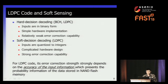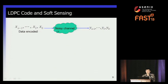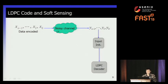For LDPC code, its error correction strength strongly depends on the accuracy of the input information. This input information represents the probability information of the data stored in NAND flash memory. So when we store data in NAND flash memory and read it back, it suffers from all the noises I just introduced, and we have to put the data into a decoder to correct these errors.